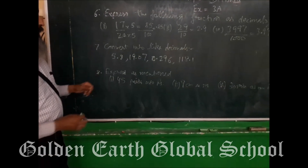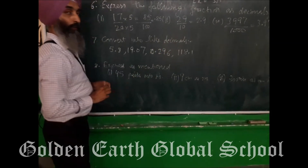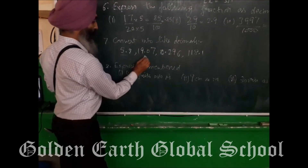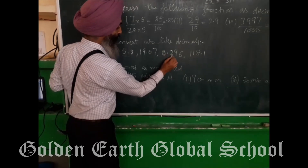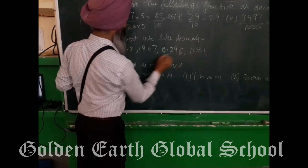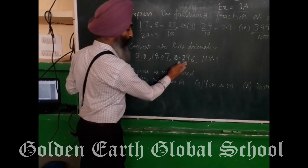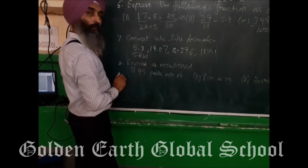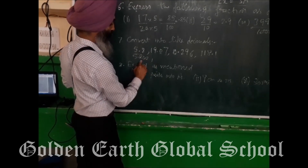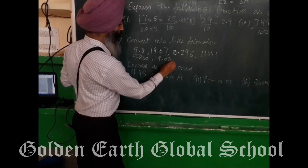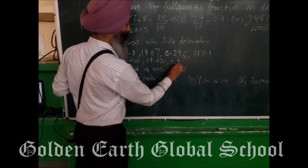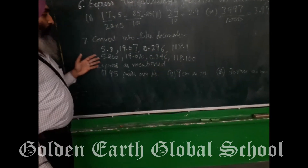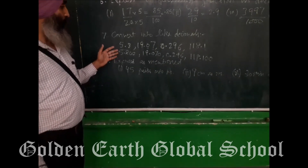The next question is 7: convert into like decimals. Look at the maximum number of decimal places — after decimal there are three places in one number, one place in another, and two places in another. So you have to put three decimal places for all, by adding zeros. One number already has three. Put one zero on another. The next one: one, two, three — now these are like decimals.